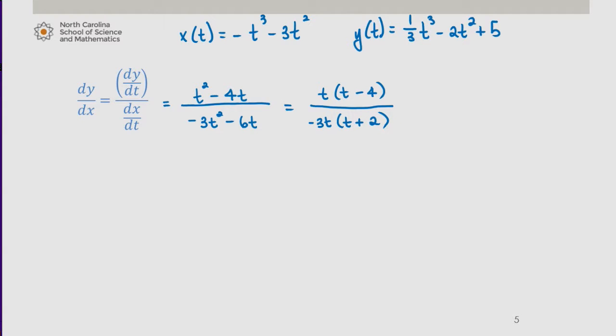Now we know that there exists a horizontal tangent line when dy/dx is 0. This happens when dy/dt is 0, but dx/dt is not.